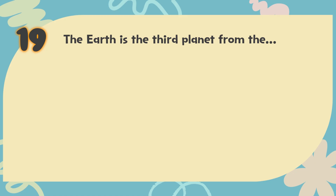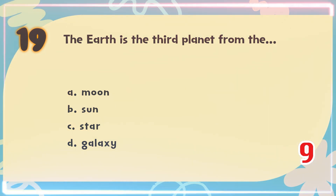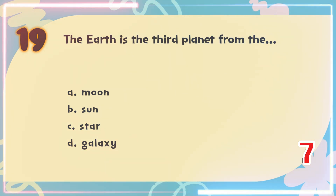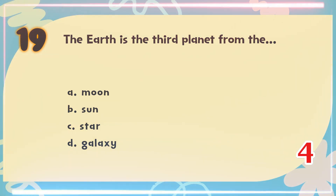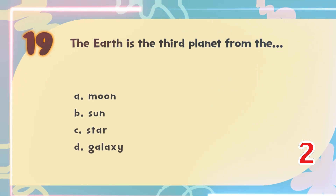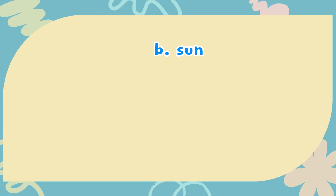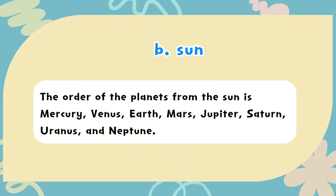Number 19: The Earth is the third planet from the — A. Moon, B. Sun, C. Star, D. Galaxy. The correct answer is B. Sun. The order of the planets from the Sun is Mercury, Venus, Earth, Mars, Jupiter, Saturn, Uranus, and Neptune.